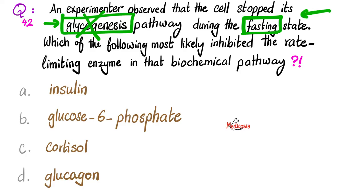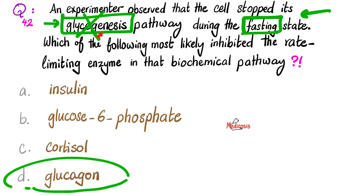The hero of the fasting state is glucagon. Glucagon will stimulate the breakdown of glycogen into glucose while inhibiting the formation of glycogen from glucose. Insulin, on the other hand, belongs to the land of abundance — the feeding state. Insulin is pro-glycogenesis. Insulin stimulates glycogen formation from glucose, and tells those cells: if you want glucose now, use it in glycolysis; if not, store it as glycogen.